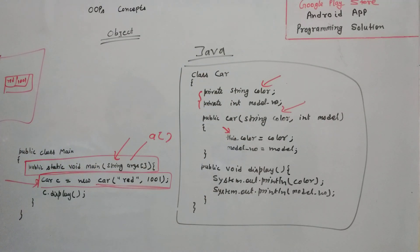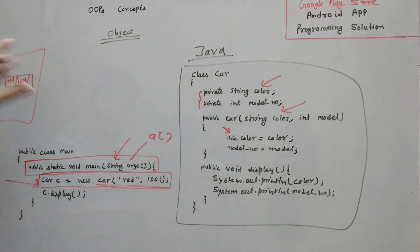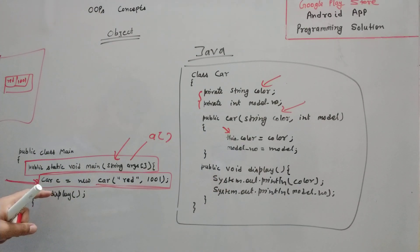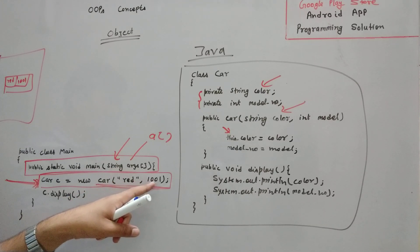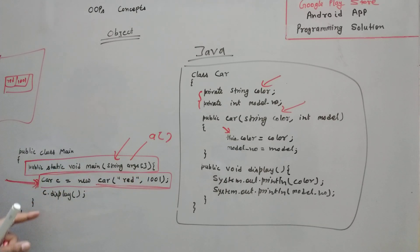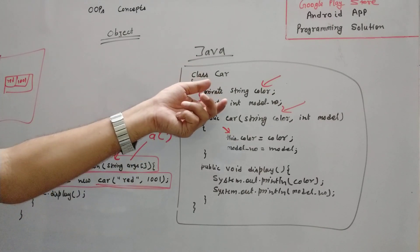Object is a real life entity which exists inside the memory in real view. Class is a conceptual view, or class is a blueprint of object, and object is a real life implementation of that class. Whenever we write this line, we are creating an object of class Car with the initial value of 'red' and 1001. We can again create another variable with another color and another model number and so on.